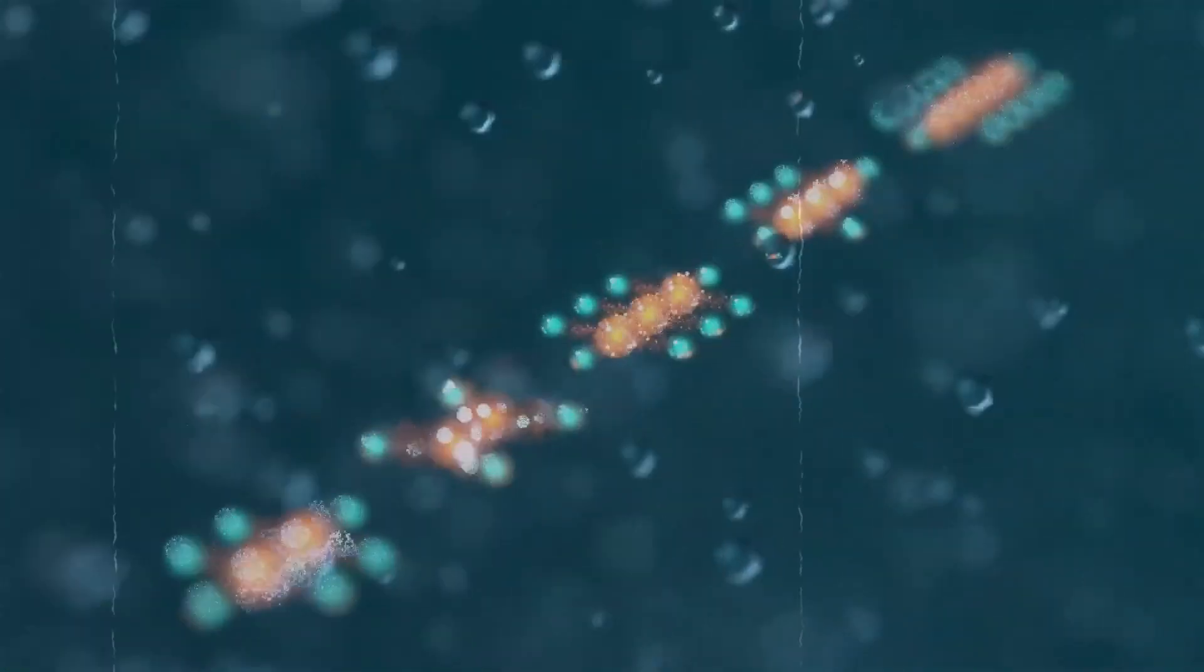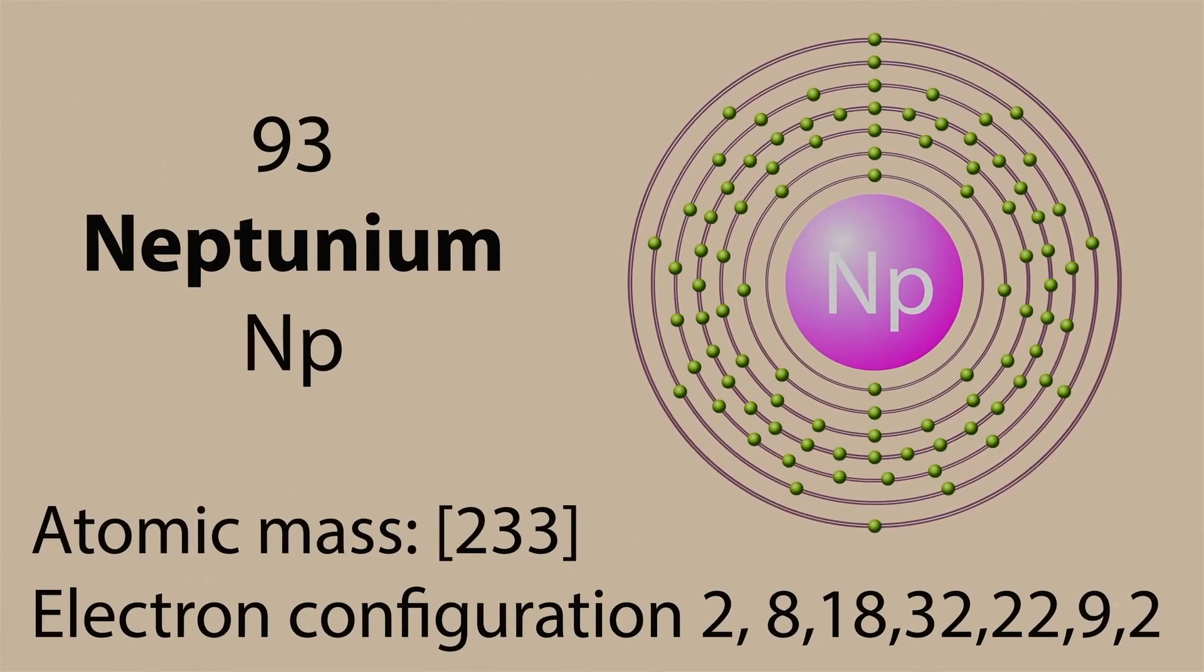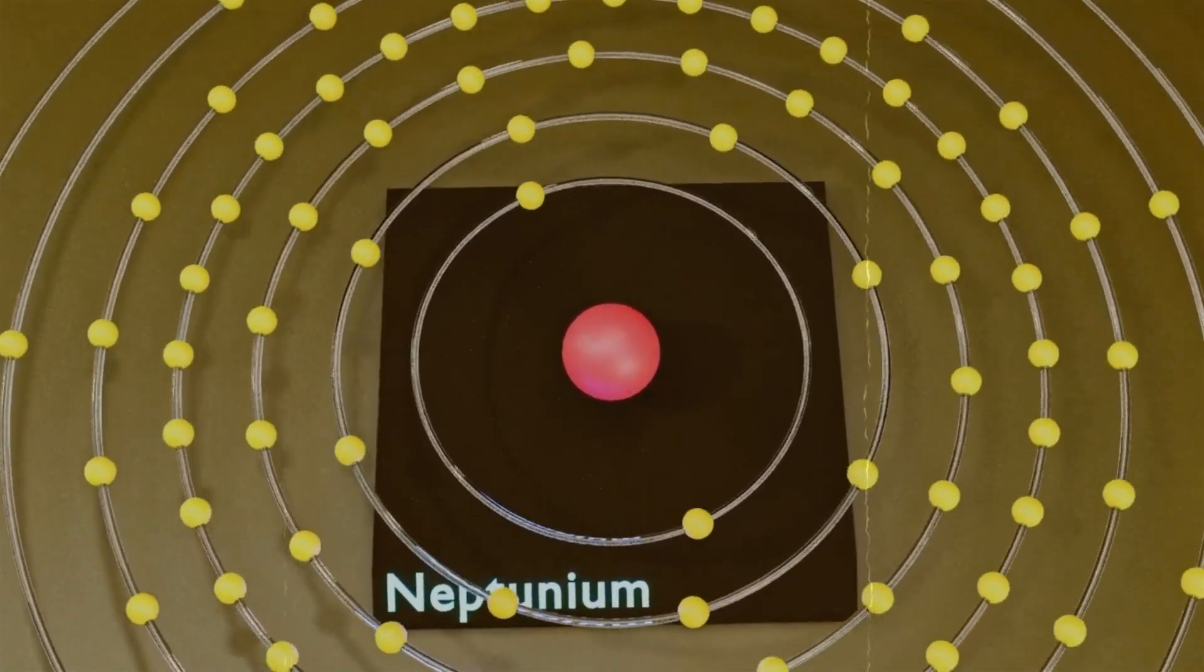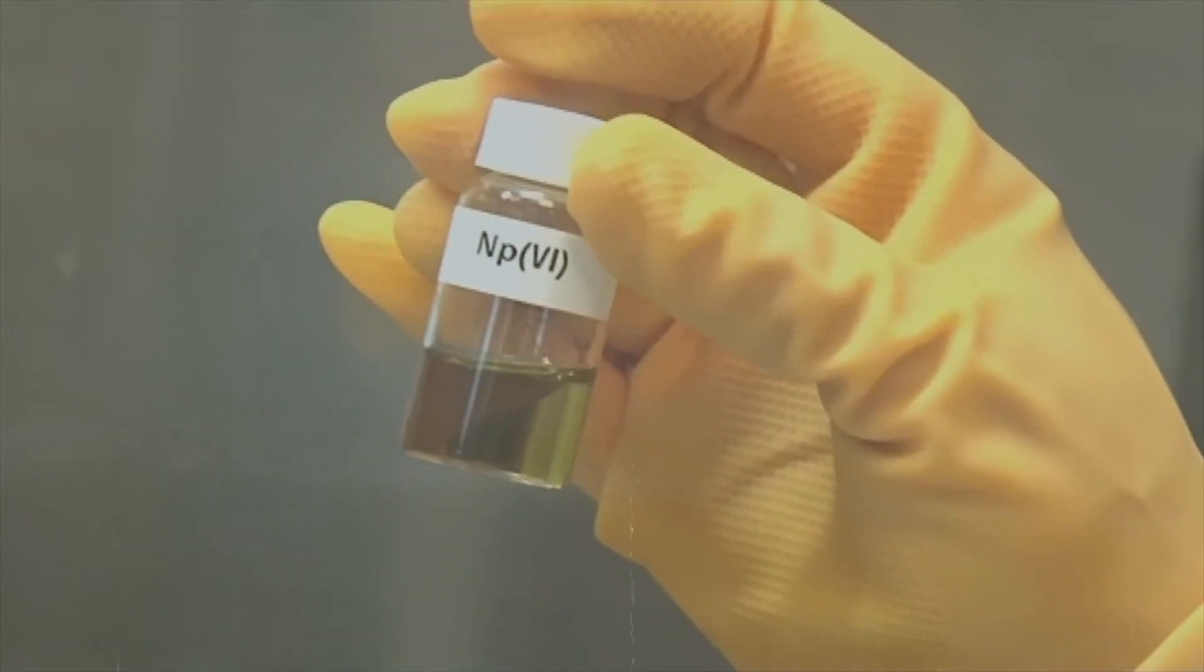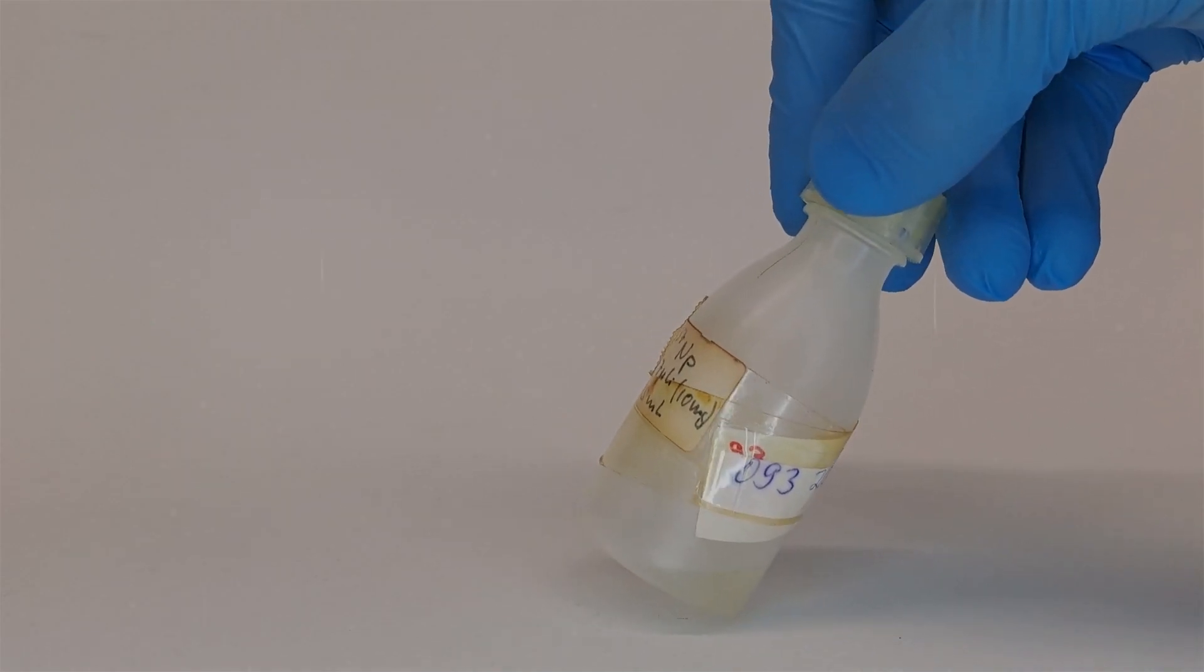This breakthrough came through the bombardment of uranium-238 with neutrons in a cyclotron, resulting in the creation of neptunium-239. The element was named after the planet Neptune, following the convention of naming elements beyond uranium after celestial bodies. This discovery marked an important milestone in the understanding of nuclear physics and the development of the periodic table, showcasing humanity's ability to unlock and harness the power of the atom.